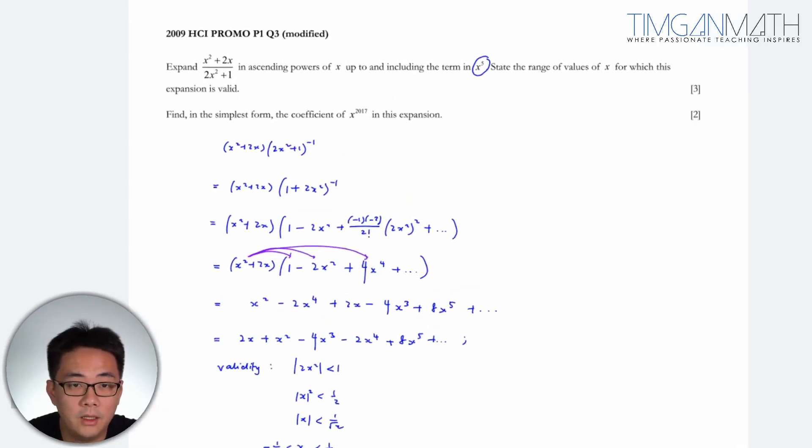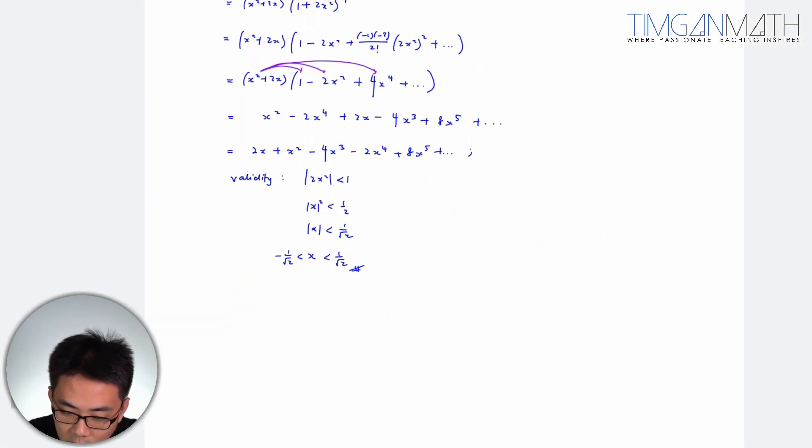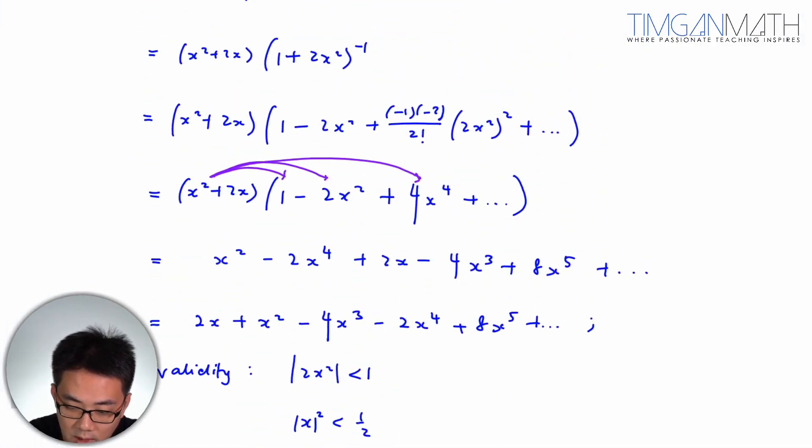So let's look at the second one: find in the simplest form the coefficient of x^2017 in this expansion. So, 2017, what we could do is actually just look at the pattern recognition here.